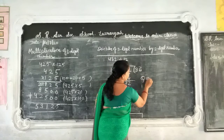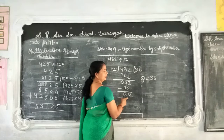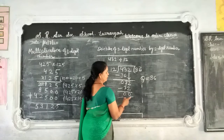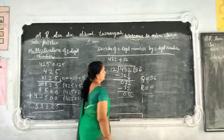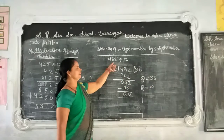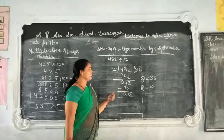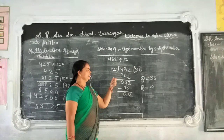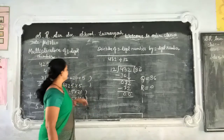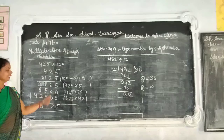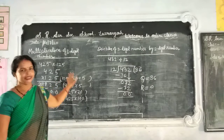The quotient is 36 and the remainder is 0. This way we can divide a 3-digit number by a 2-digit number. You can practice both division and multiplication. Thank you.